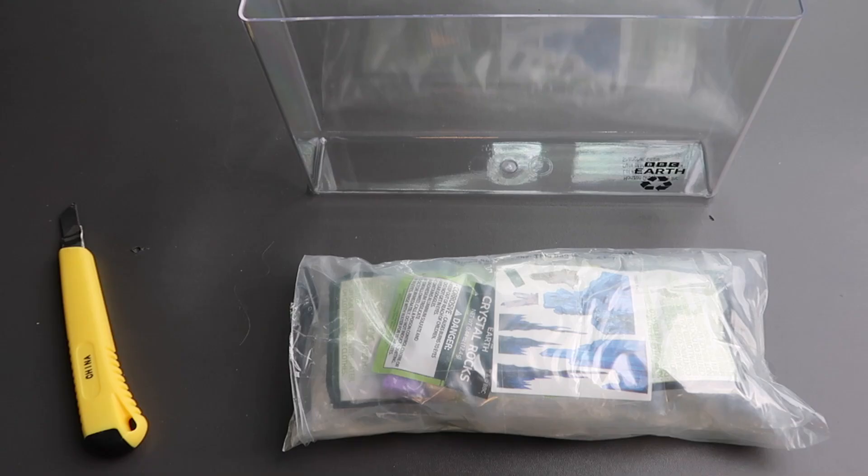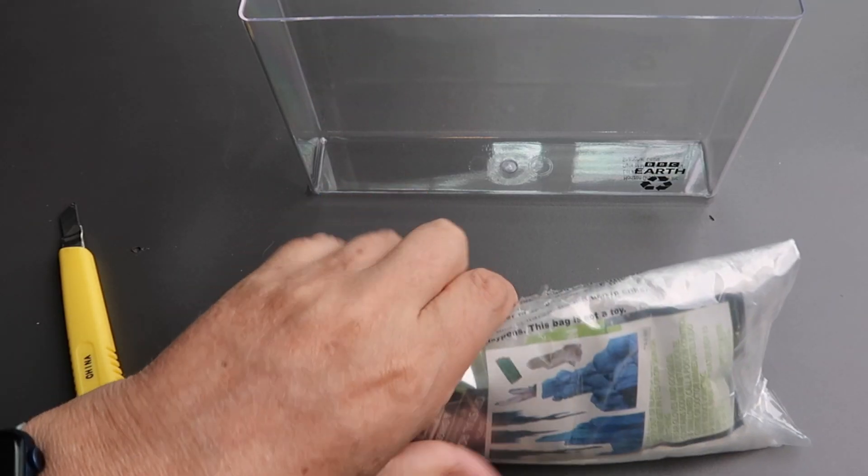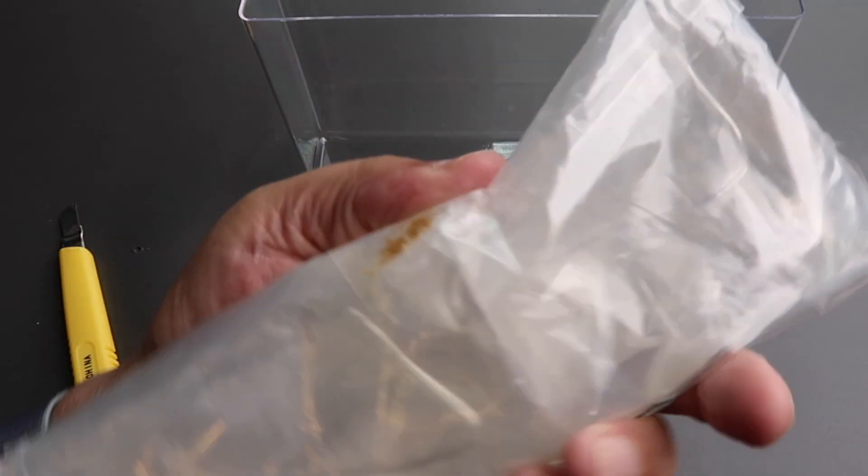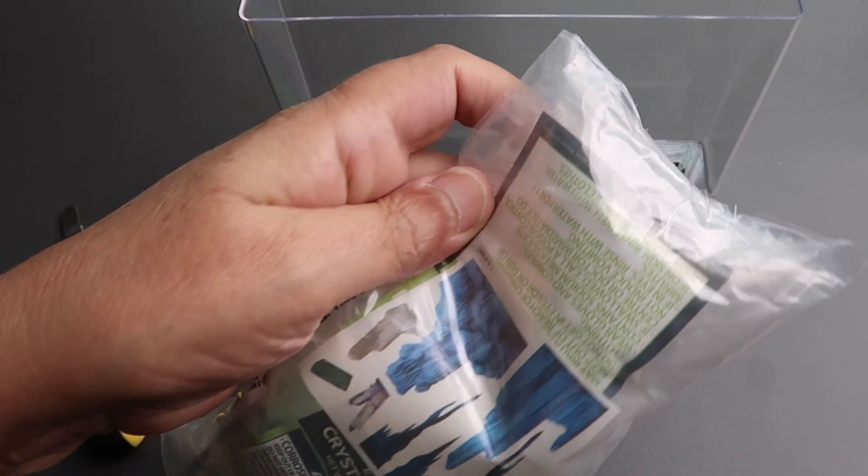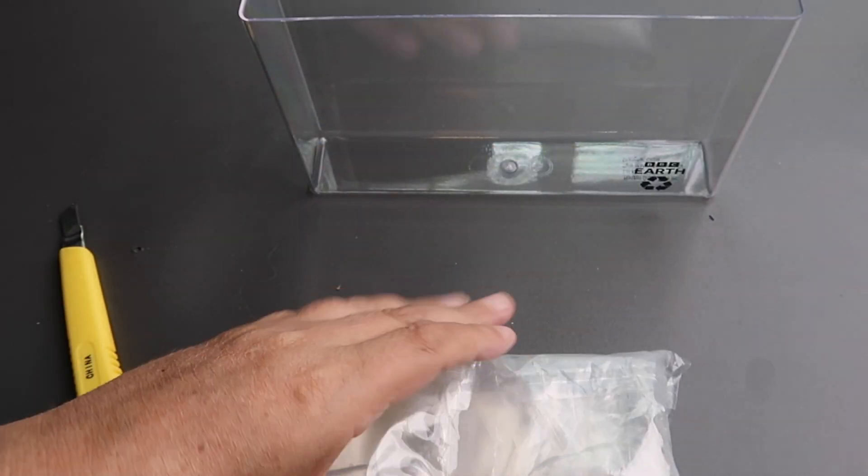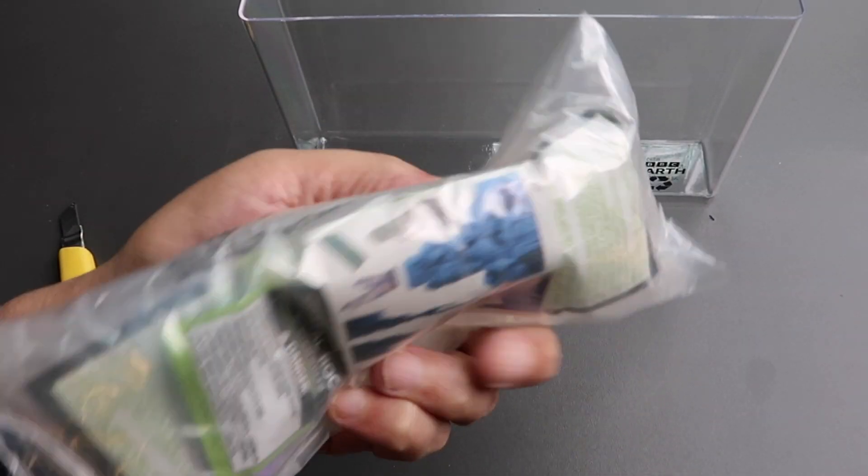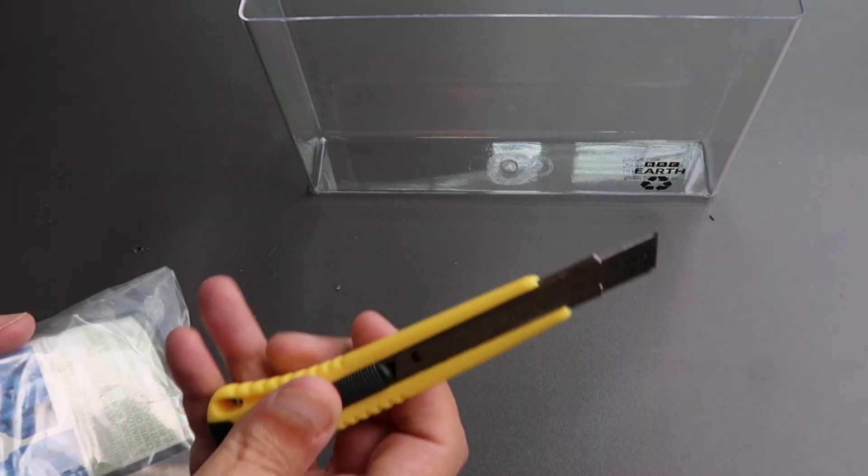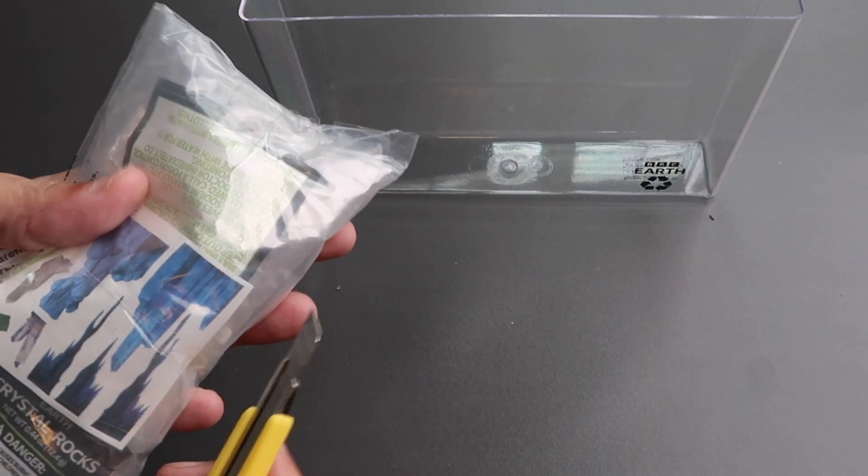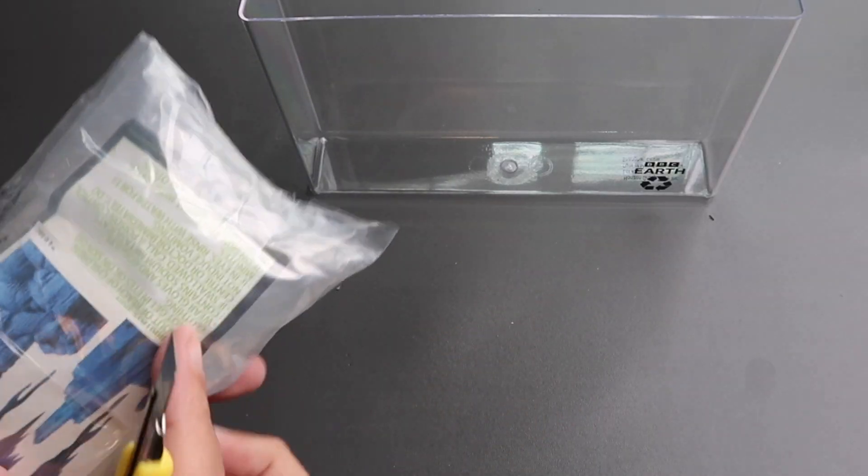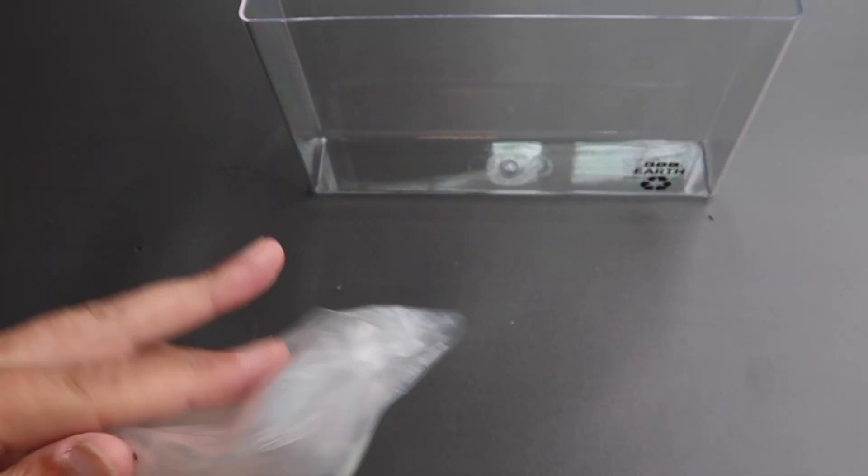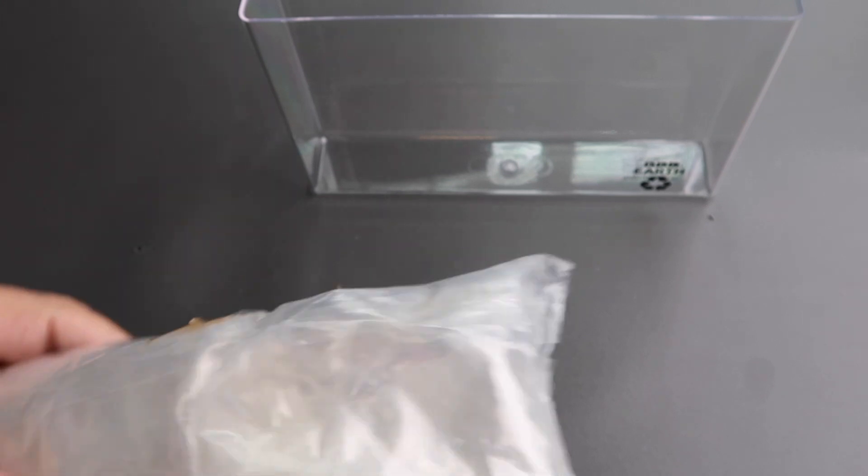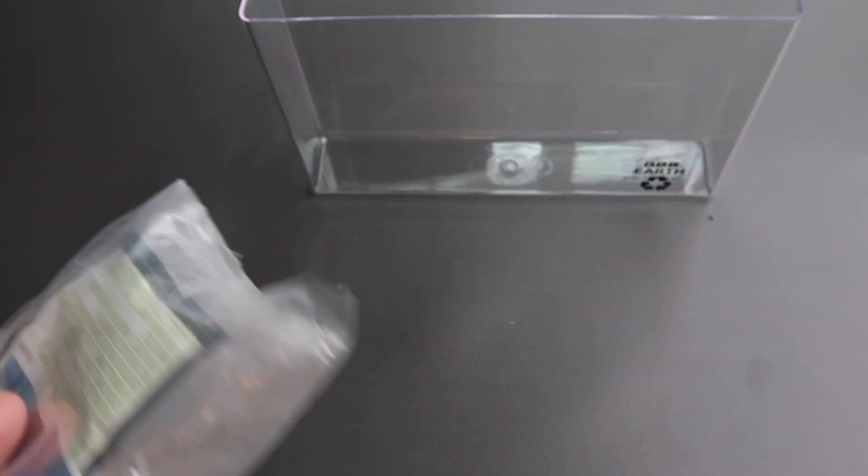Here's what we have inside: we have a bag of fluid, a gel, and some crystal rocks. Now be really careful how you unpack this. I have a knife, but make sure as you pull the bags of crystal rocks out of here you don't catch the bag and leak out all this gel. I'll do that off camera so I don't make a mess.